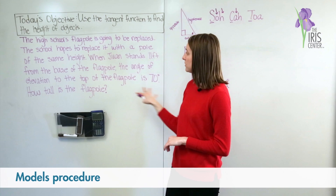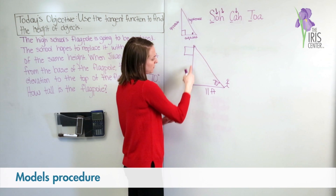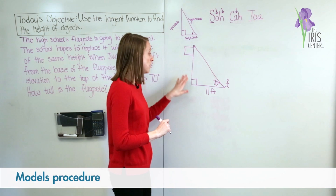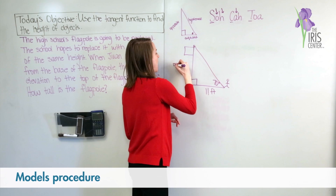And looking back at the problem, I've created a diagram that shows me everything the problem is telling me, but I notice something else. I notice that this flagpole and the ground make a 90 degree angle, which means this is a right triangle, and we can use one of our ratios to help us figure out the height of the flagpole.